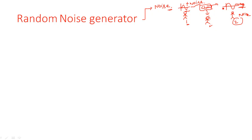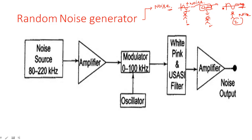Now let us see the block diagram of a noise generator. The first and foremost block is a noise source. What are the different types of devices we can use as a noise source? That is nothing but a diode or transistors — any non-linear devices can be preferred as a noise generating source. So a non-linear device like a diode is taken and used to generate noise information.